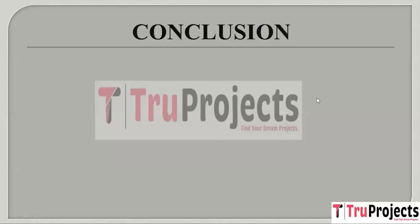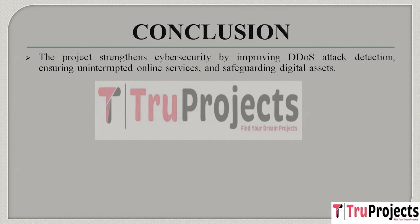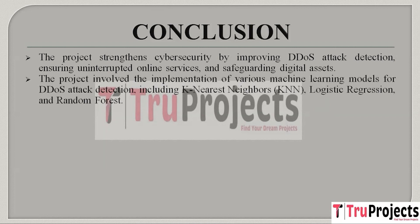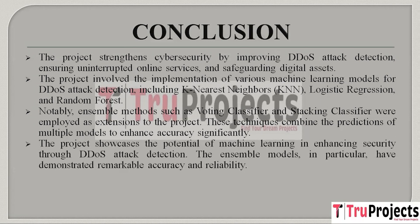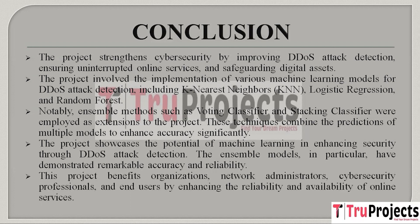In conclusion, the project makes digital systems safer by better detecting DDoS attacks, ensuring online services stay up and digital assets are protected. We use different machine learning models — K-Nearest Neighbors, Logistic Regression, and Random Forest — to find and respond to DDoS attacks effectively. Accuracy is improved significantly using voting classifier and stacking classifier techniques, combining predictions of multiple models. This project demonstrates how machine learning can enhance security, benefiting organizations, network admins, cybersecurity experts, and end users by making online services more reliable and secure.